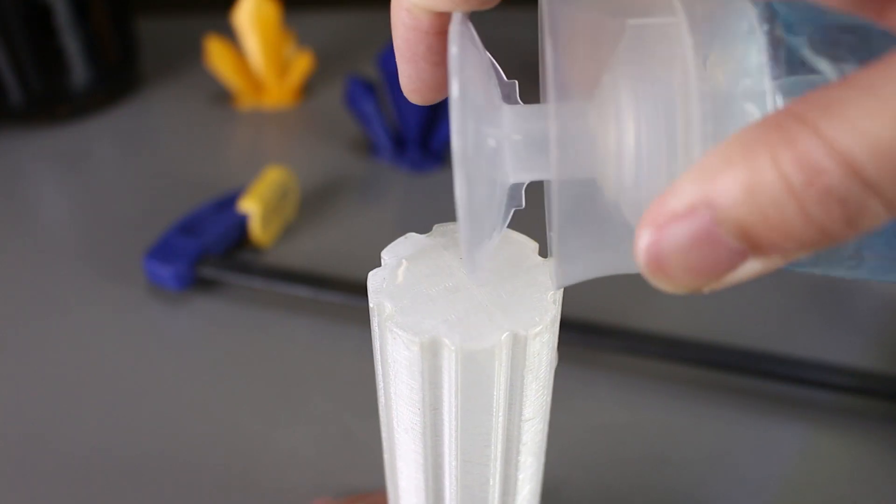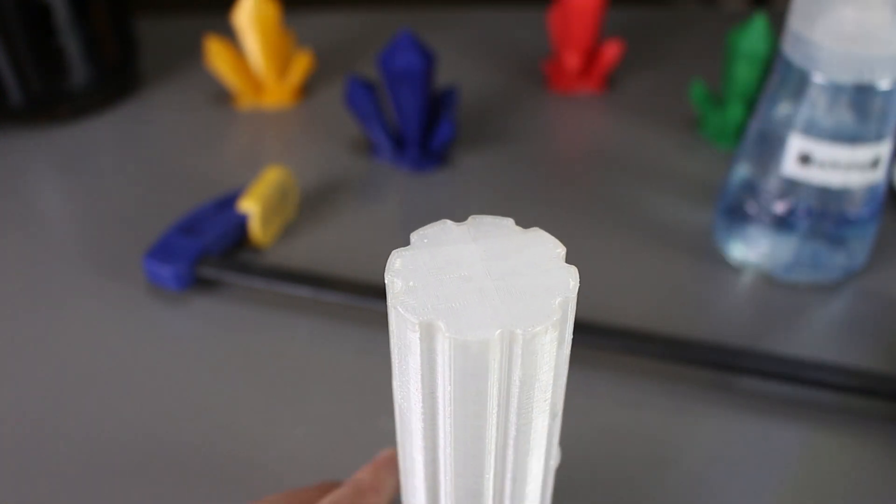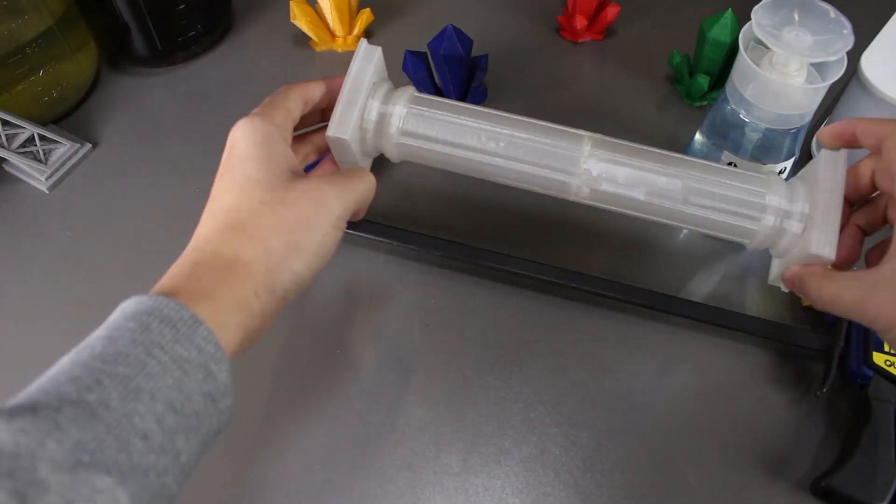We'll pour some acetone on one side of the pillar and then place the other one on top. Then we will use a clamp to secure it for a period of time.